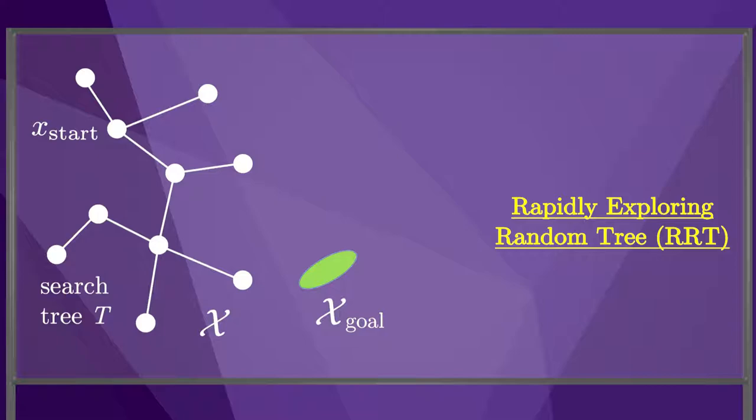Let's start with a partially formed search tree T. x_start is the initial state, X is the state space, and any state in x_goal is an acceptable final state. The RRT planner chooses a random state x_samp, finds the nearest node x_nearest already in the tree, finds a collision-free motion from x_nearest to x_new, which may or may not be the same as x_samp but at least is in the direction of x_samp, then updates the search tree.